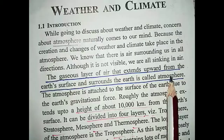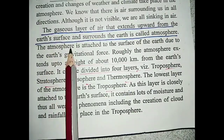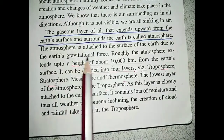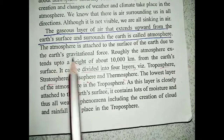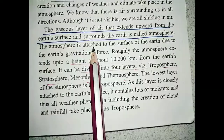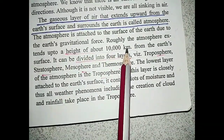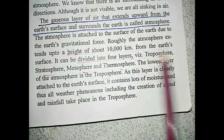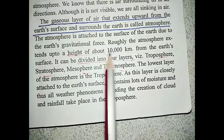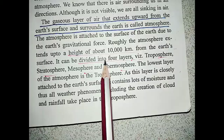The gaseous layer of air that extends upward from the earth's surface and surrounds the earth is called the atmosphere — it is the blanket of air that surrounds the earth's surface. The atmosphere is attached to the surface of the earth due to gravitational force, and it extends up to a height of about 10,000 kilometers from the earth's surface.